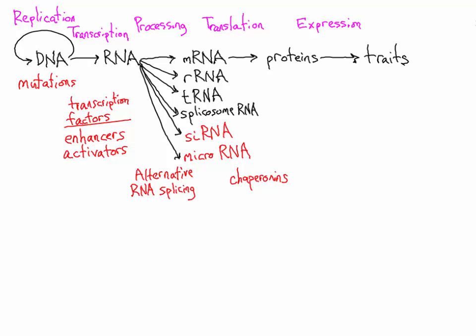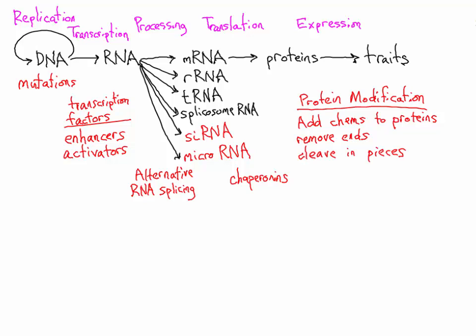After the protein is built there are a variety of ways proteins can be modified. These would include adding chemicals to the protein such as methyl groups or a phosphate group or other chemicals. This may be done in the Golgi apparatus or proteins could also have the ends removed either the start or the end of the protein. They can be cleaved into pieces. Also multiple polypeptides can combine together to form a large quaternary structure protein.